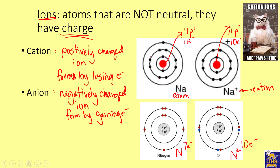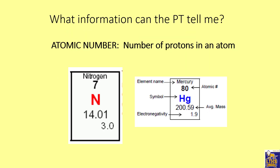What information does the periodic table tell us? The whole number given for each element tells how many protons it has — that's called the atomic number. For example, nitrogen has seven protons. If nitrogen is a neutral atom, it also has seven electrons. The periodic table also shows the symbol, name, average atomic mass, and some tables even include electronegativity.